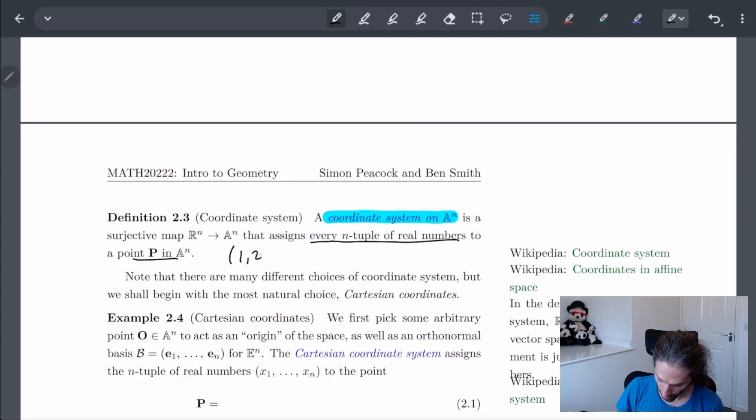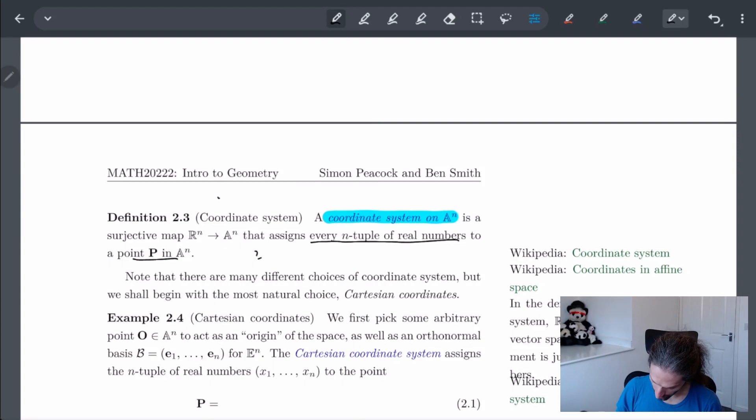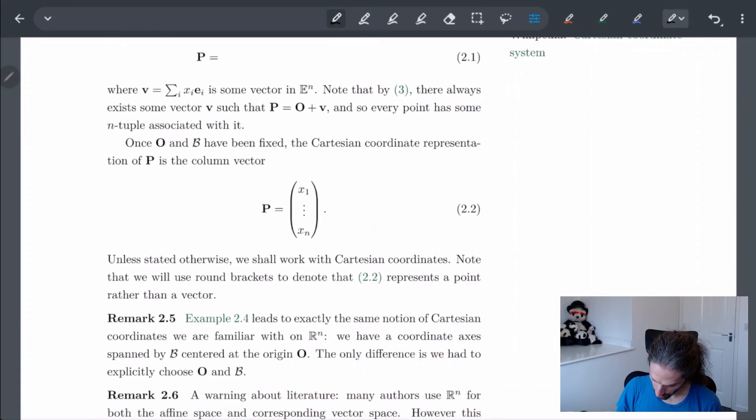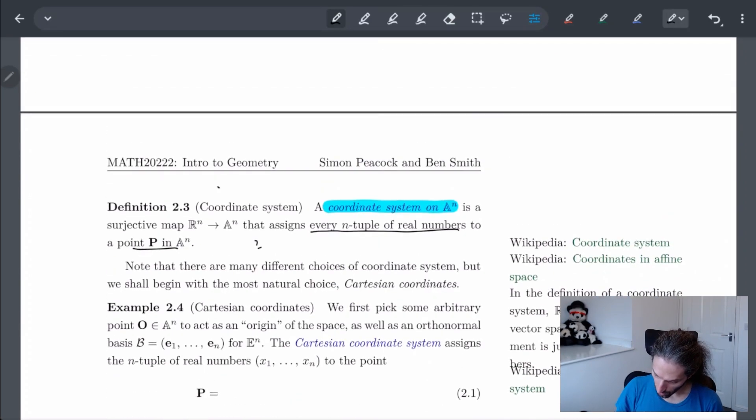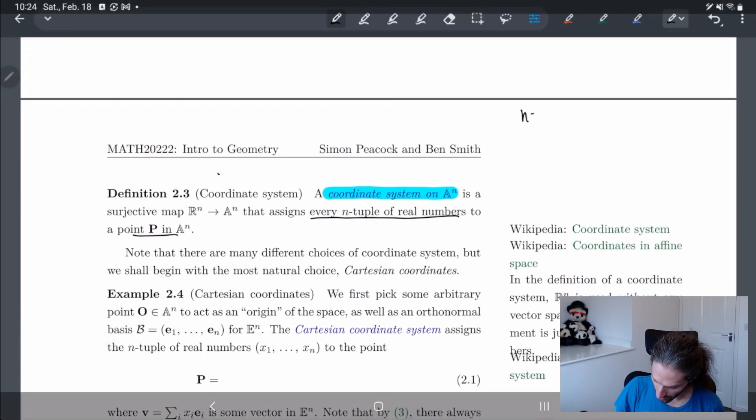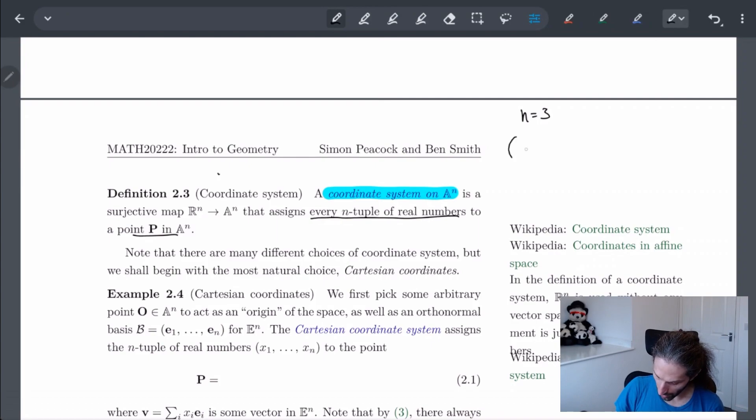So in other words, we can consider, for example, in R^n, if n equals two, let's look at, do we have an example? Yeah, we'll have an example. Okay, we'll do this example in the next one. So what we kind of have is like, for example, if n equals three, and I have the point one, three, two point seven, this is going to be associated to some point P in A^3. I don't know what point, but it's some point.